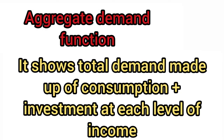What is the aggregate demand function? It shows the total demand made up of consumption plus investment at each level of income. We simply add up consumption plus investment to get aggregate demand. At each level of income, as consumption changes and investment remains constant, we see how aggregate demand changes — that is the aggregate demand function.